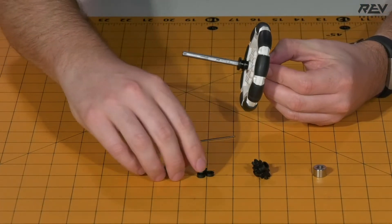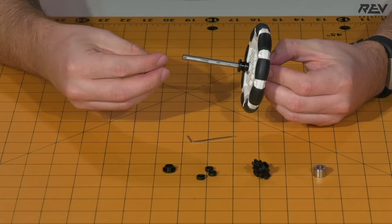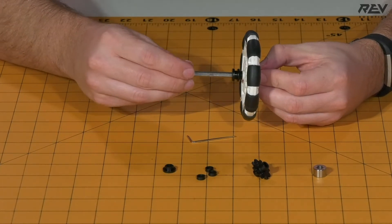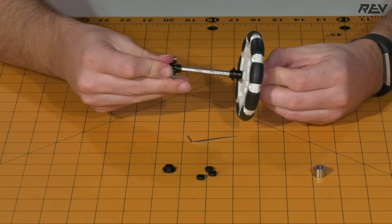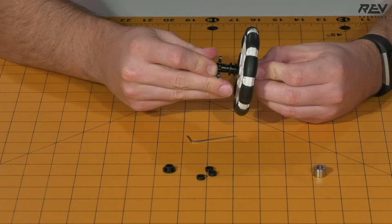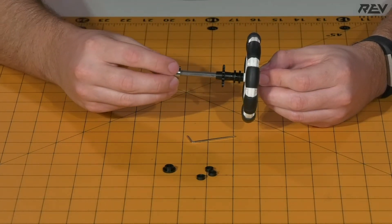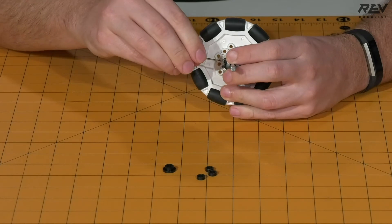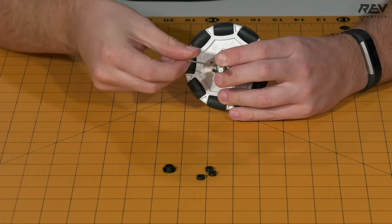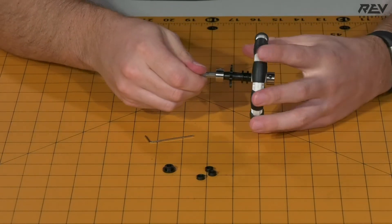Once complete, add a spacer followed by your sprocket. Once the sprocket is all the way on, add the remaining shaft collar. It's a good idea to tighten the shaft collar down just a little bit so it doesn't go anywhere.